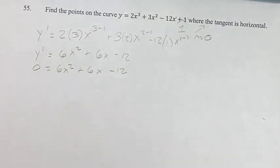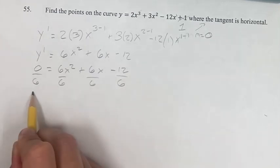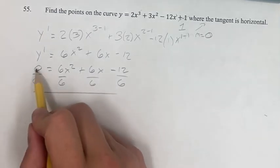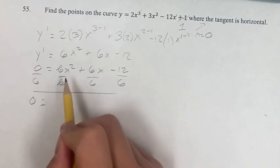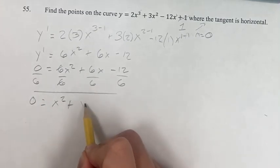We have a quadratic we can solve. If you notice, everything is divisible by 6. It will make it a lot easier to solve if we get rid of those. We get 0 equals x squared plus x minus 2.